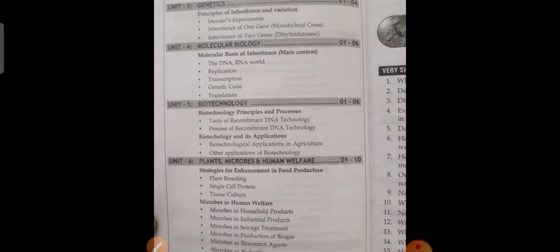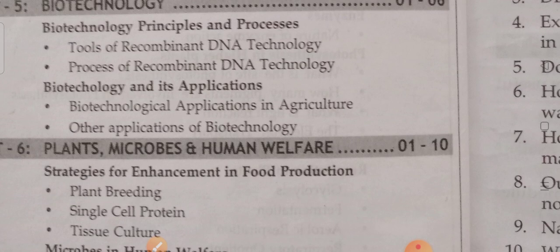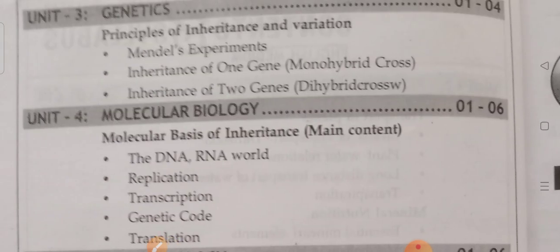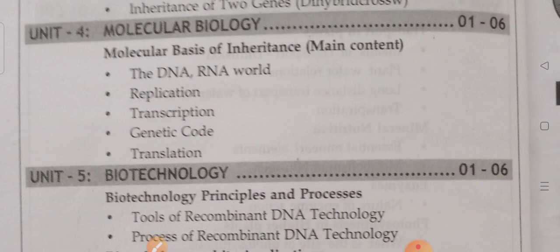The third unit is Genetics: Principles of Inheritance and Variations, Mendel's Experiments, Inheritance of One Gene, Inheritance of Two Genes. The fourth unit is Molecular Biology: Molecular Basis of Inheritance, DNA, RNA World, Replication, Transcription, Genetic Code, and Translation.